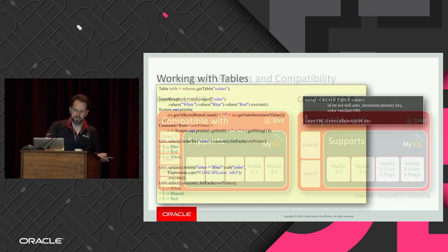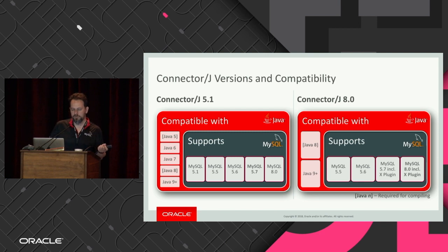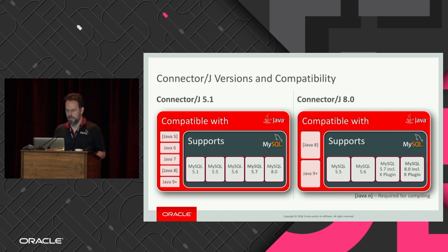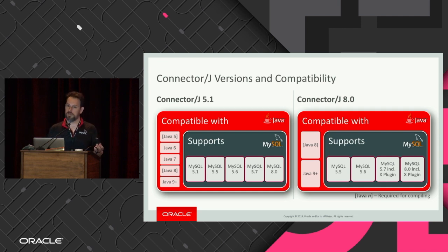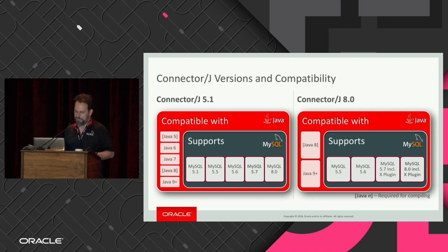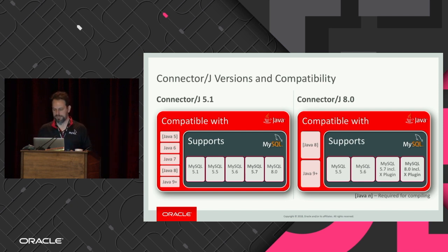To use this you'll need Java 8 or 9 to talk to the new protocol and use all the new APIs. We're still maintaining the older connector for people using older versions of Java — you won't get the X Protocol but the connector still works as a standard Java connector.